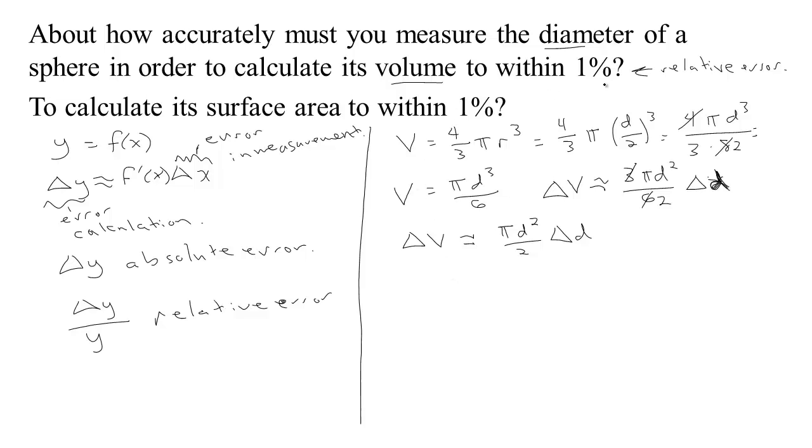But we're talking about relative error. So we want to find not just the error in the volume, but the error compared to the actual volume. So I'm going to divide both sides of this equation by the volume. Of course, we know how we're getting the volume from d. We're calculating pi d cubed over 6.